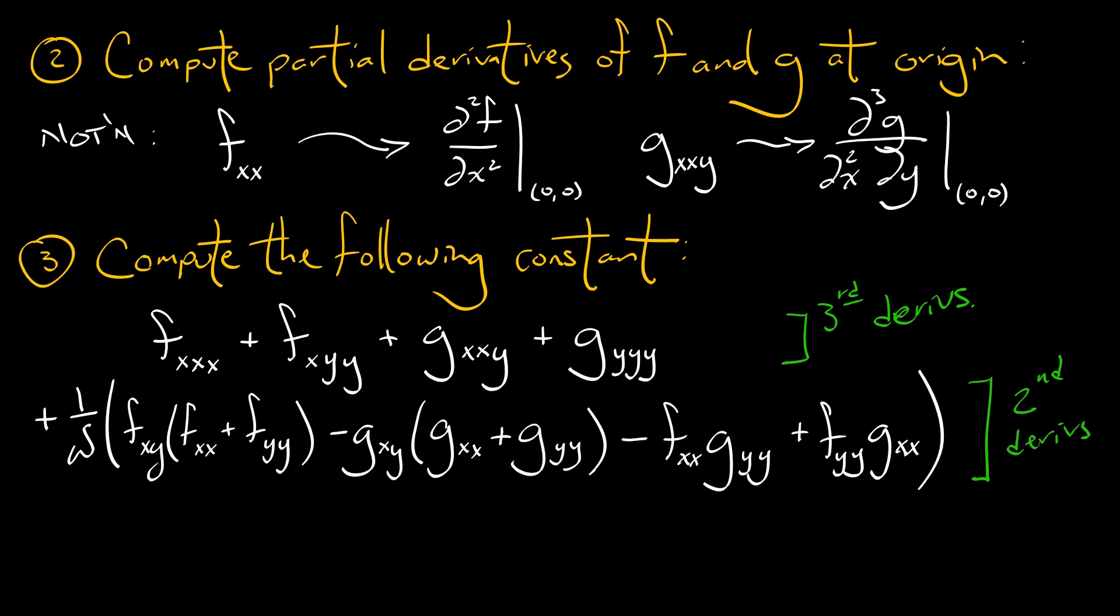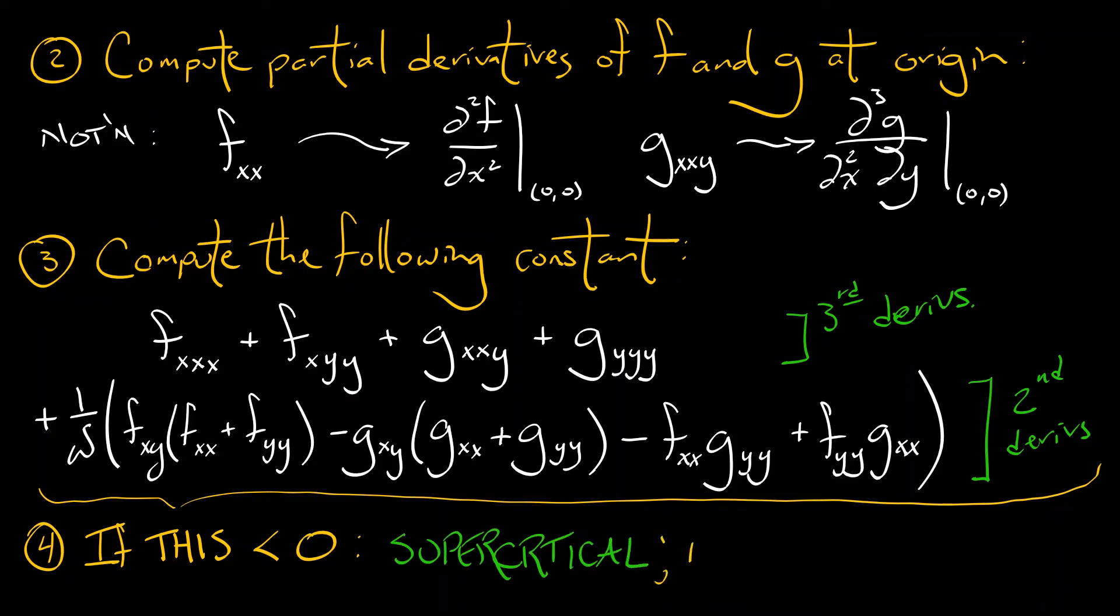You add that to the third derivatives that we computed before and you get what? You get a number. All of these partial derivatives are evaluated at the bifurcation point. And last step, if this number is negative, you've got a supercritical Hopf bifurcation. If this number is positive, it's subcritical.